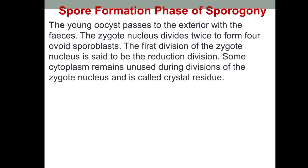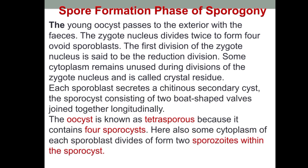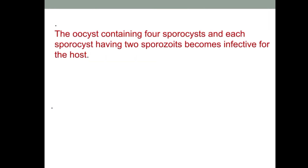In the spore formation phase of sporogony, the young oocyst passes to the exterior with the feces. The zygote nucleus divides twice to form four ovoid sporoblasts; the first division is a reductional division. Some cytoplasm remains unused and is called the residual body. Each sporoblast secretes a chitinous secondary cyst called the sporocyst, consisting of two boat-shaped halves joined longitudinally. The oocyst is tetrasporous because it contains four sporocysts, each containing two sporozoites, and becomes infective for the host.